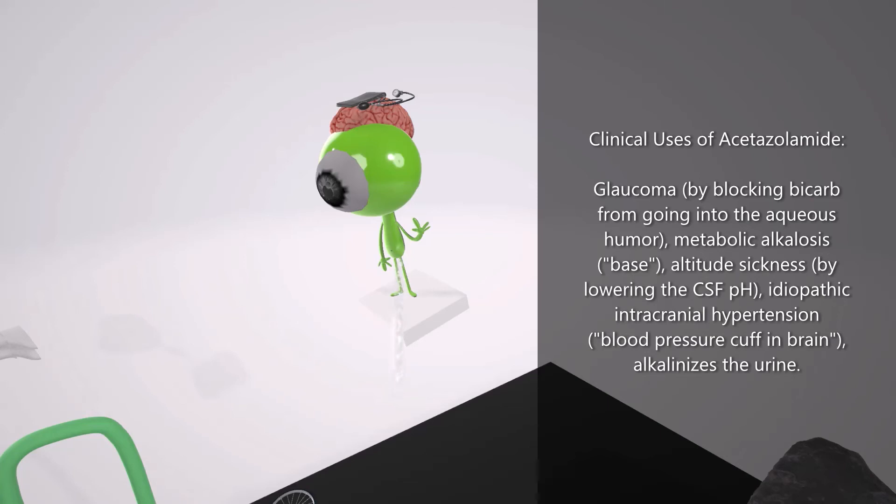This martian is urinating to help us remember the urination, the alkalinization of urine. Acetazolamide and other carbonic anhydrase inhibitors are used to alkalinize the urine, for example, to prevent stones from forming.